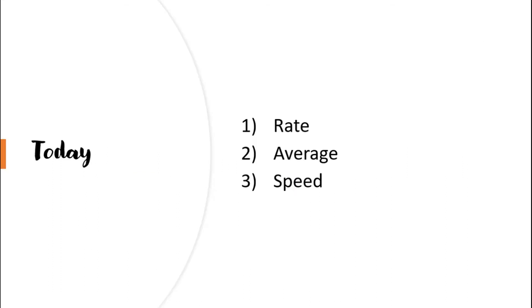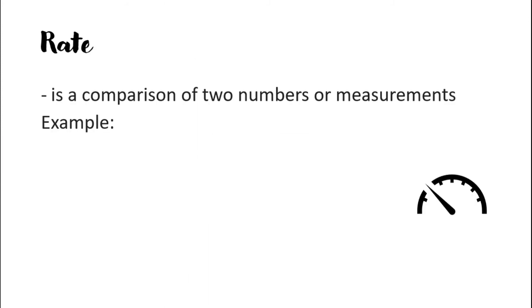Now we move on to rate, average, and speed. Rate is a comparison of two numbers or measurements. For example, 0.04 dollars per hour — this is the kind of rate you see at a car park. Other examples include 100 km per hour, which is the speed of a car, and 100 ml per three hours, which could represent water flow from a pipe.